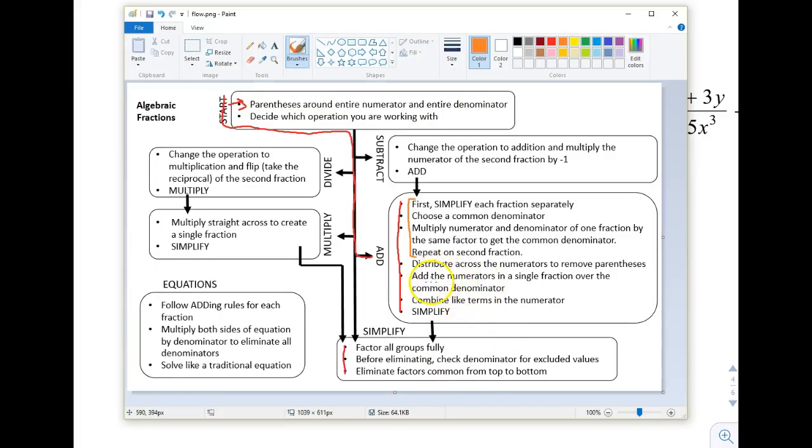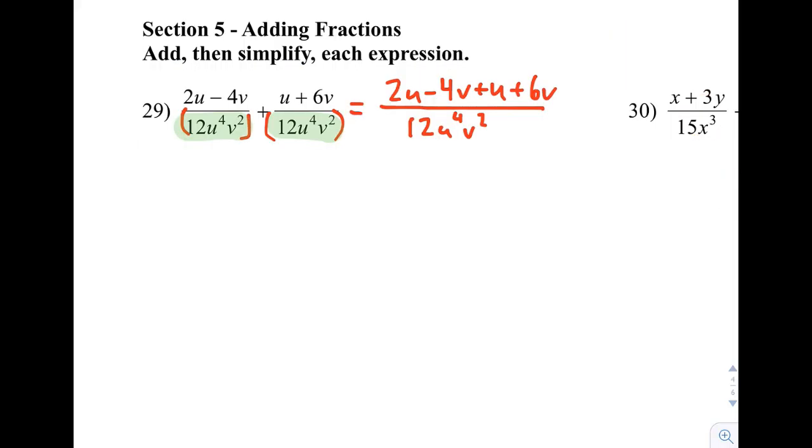Then it says combine like terms in the numerator and finish by simplifying. Our like terms in the numerator are the ones that have the same letter. We have 2u and another u. We have negative 4v and positive 6v. So if we combine this together, 2u and 1u is 3u. And then negative 4v and positive 6v is 2v. All of that is over 12u to the 4th v squared.